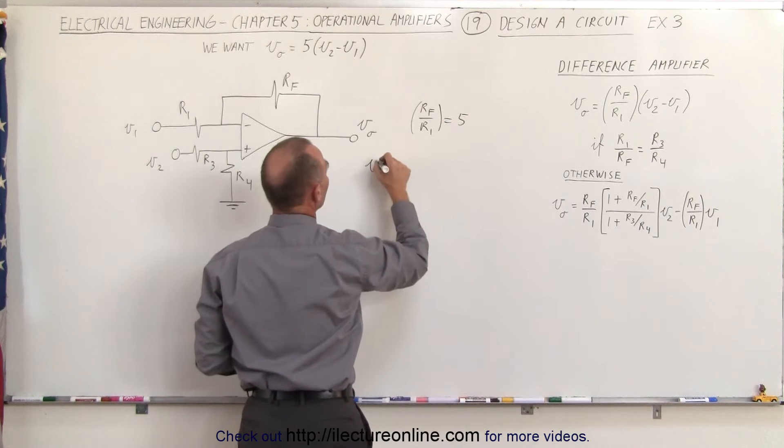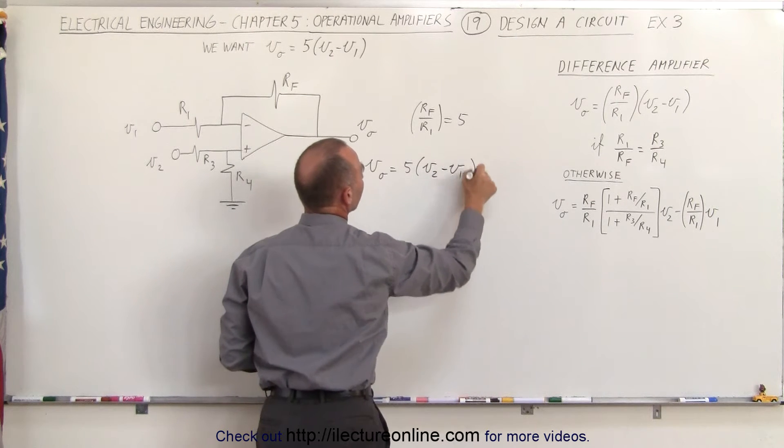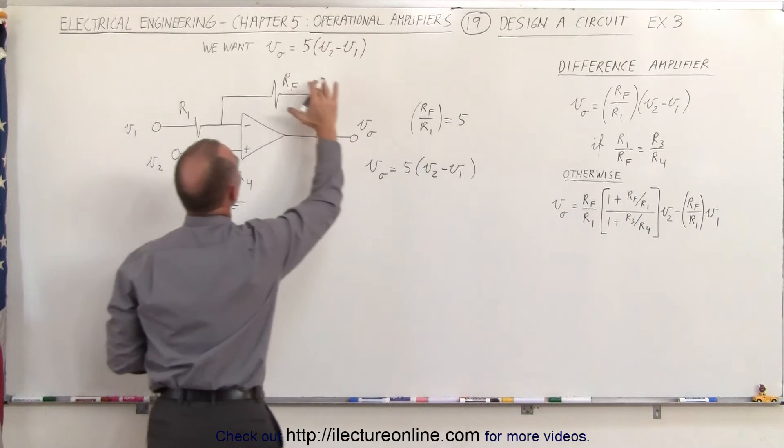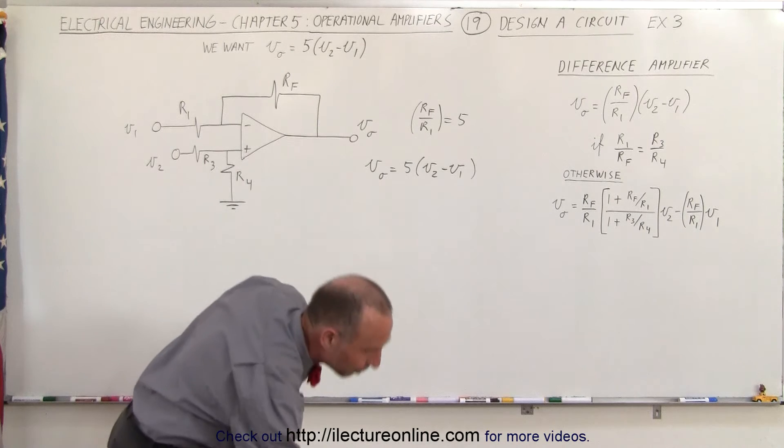That way we have the output voltage equal to 5 times V2 minus V1. That means Rf to R1 must be 5, that means Rf must be 5 times R1, so let's go ahead and plug in values that are acceptable.